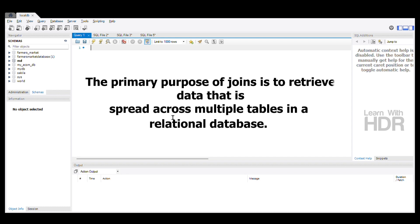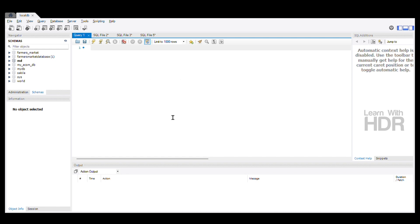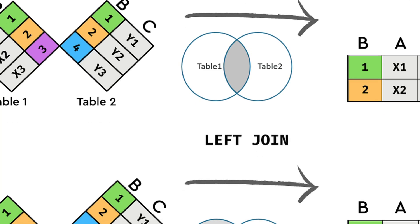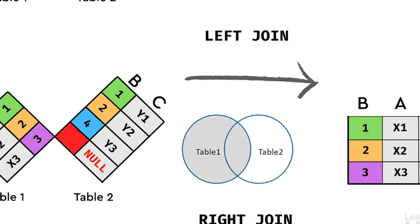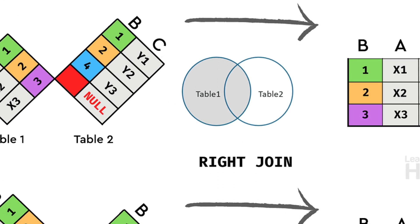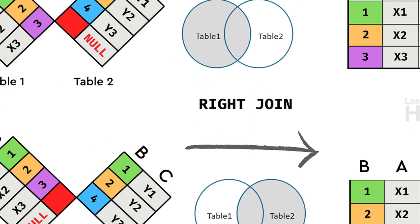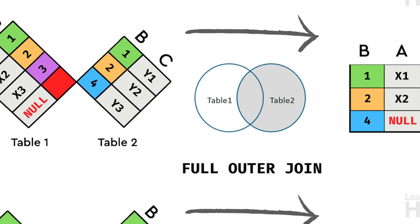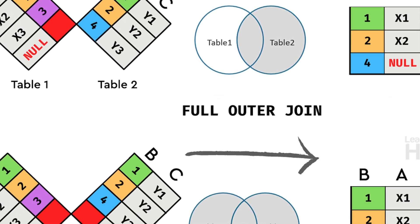We use 4 types of joins. First, inner join. Second, left join. Third, right join. And fourth, outer join or full join.